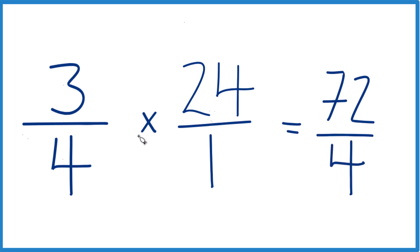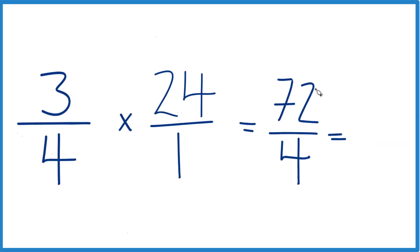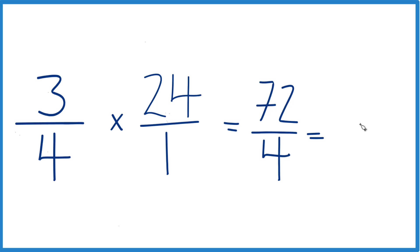So 3 fourths times 24 over 1, or just 3 fourths times 24, gives us 72 over 4. But 4 should go evenly into 72. 4 times 18 equals 72, so when we divide 72 by 4, we get 18.